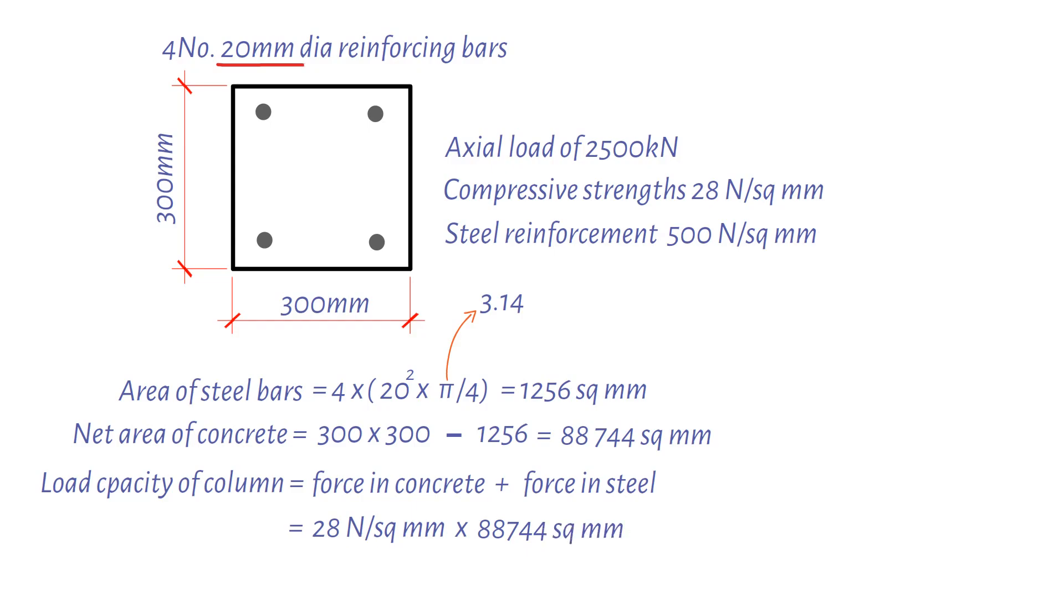Plus force in steel, which is steel reinforcement 500 newtons per square millimeter multiplied by area of steel bars, 1,256 square millimeters. If we divide this by 1,000 to convert to kilonewtons.